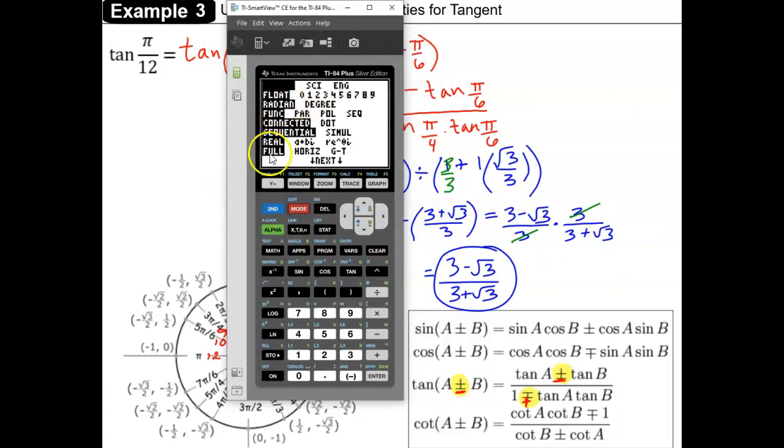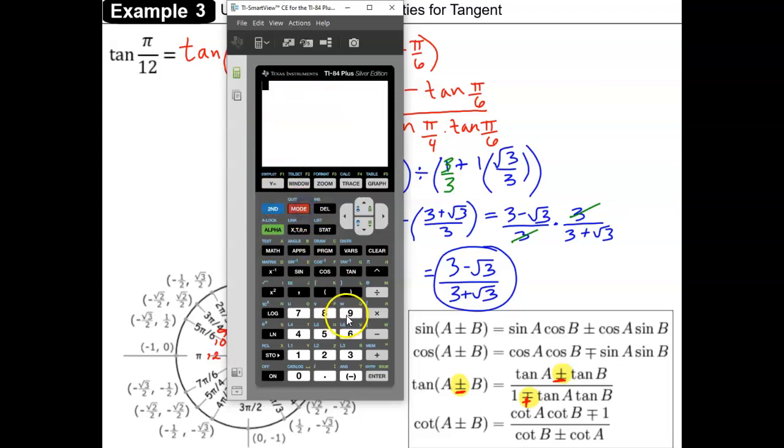Check that you're in radian mode, and then we're going to compare the tangent of pi over 12. We're going to compare that decimal to our answer, which in the numerator was 3 minus the square root of 3, and in the denominator 3 plus the square root of 3. We can see that those decimals are equivalent, and so we didn't make any mistakes as we were simplifying.